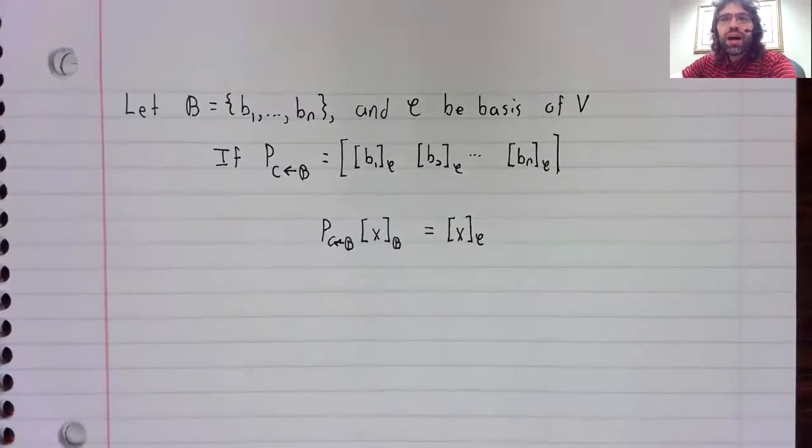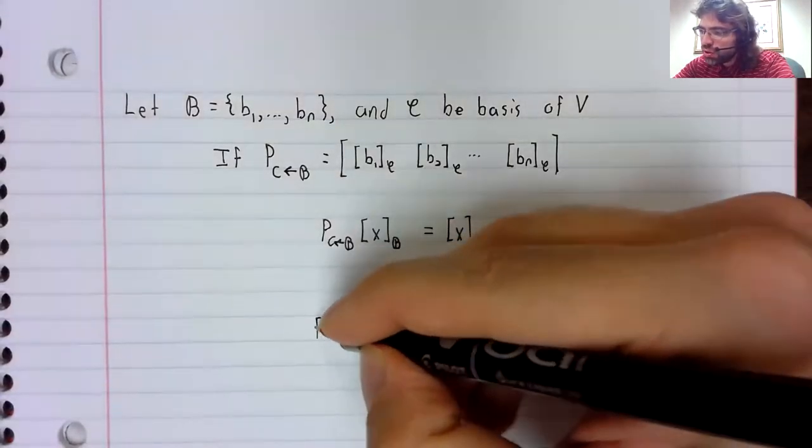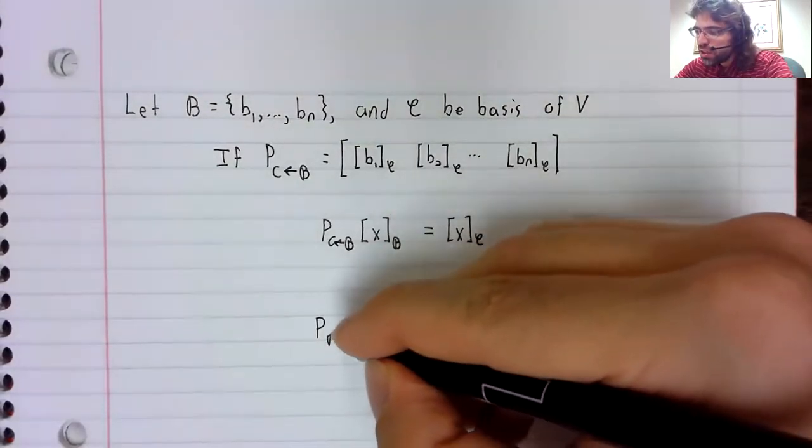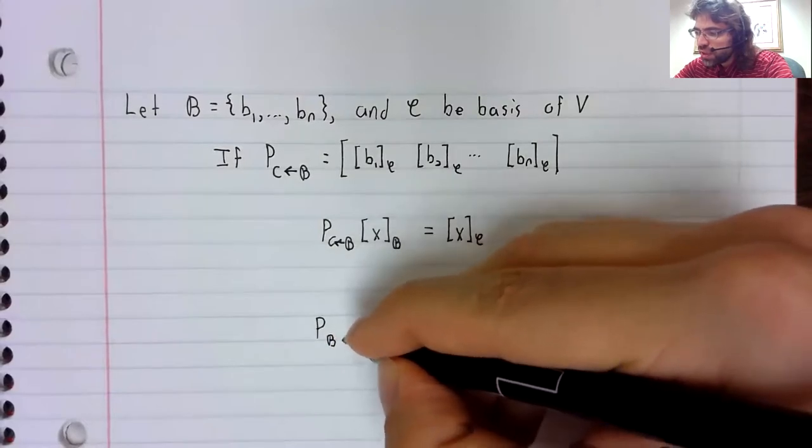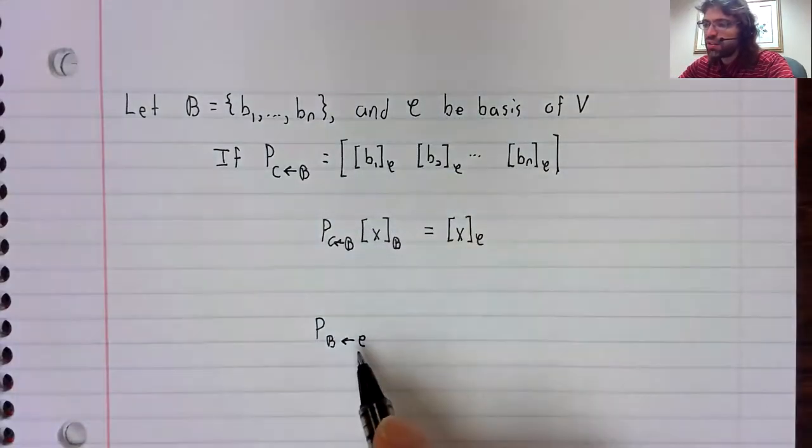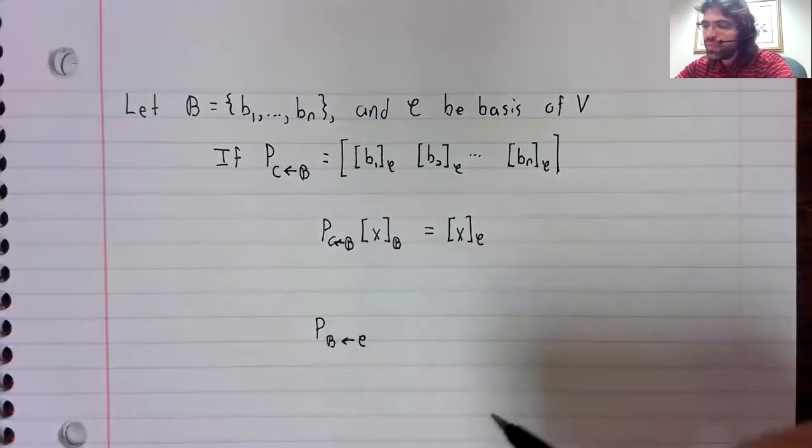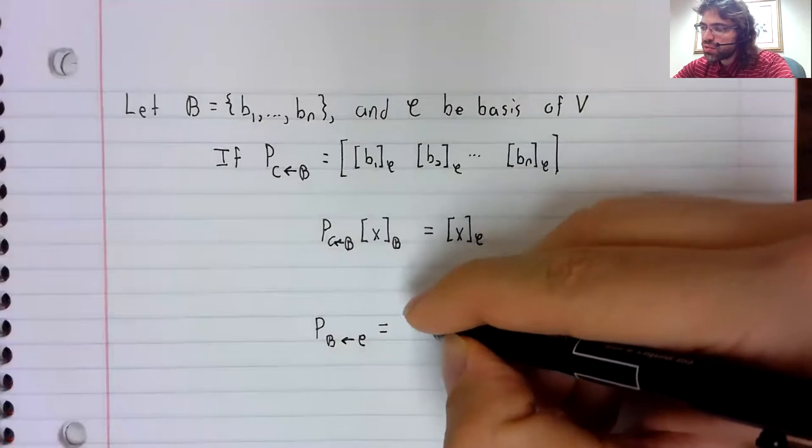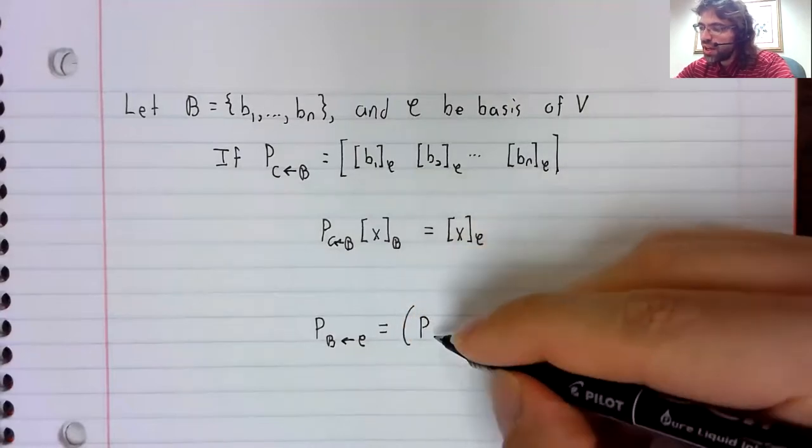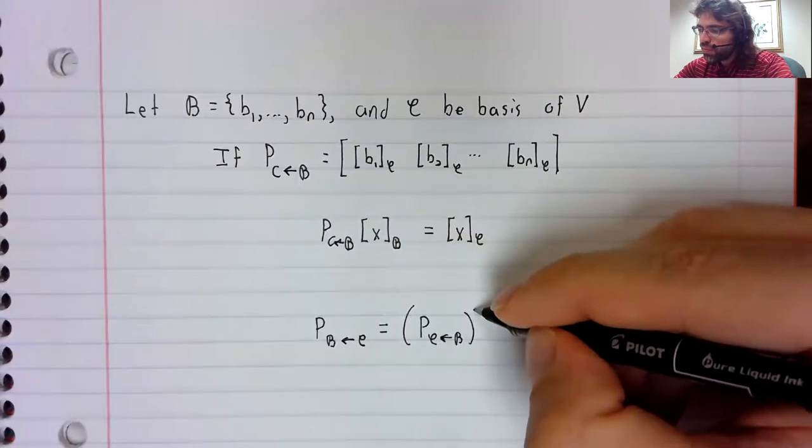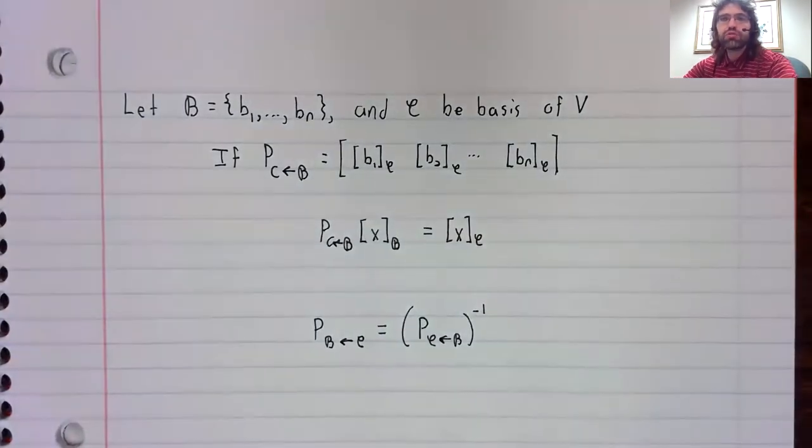Don't find inverses, but I might as well mention. You can also talk about going the other way, you can talk about taking a coordinate vector with respect to C and writing it in terms of B. And this matrix is the inverse of the matrix we just wrote down.